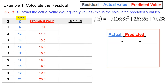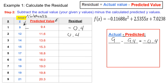Step two: subtract the actual y values minus the calculated predicted y values. Our actual values are the given y values — 9, 12, 14, and so forth — and our predicted values are what we got when we plugged in x. Subtracting the two columns: 9 minus 9.4 gives negative 0.4; 12 minus 11.6 is 0.4; 14 minus 13.6 is 0.4; and continuing through the chart, including 21 minus 20.3. These are our residuals.